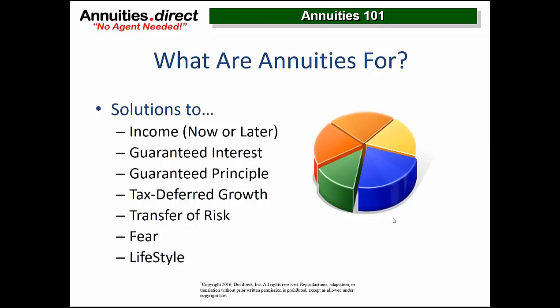You can solve for income or you can solve for guaranteed interest. Income now is an immediate annuity — a SPIA. Income later is a deferred income annuity or income rider. Guaranteed interest is a MYGA. Guaranteed principal would be an indexed annuity or a MYGA. You also get tax-deferred growth, which is why annuities were put on the planet in the first place. You're looking at your portfolio and asking how much risk you want to transfer. If you want growth, go buy a non-annuity. If you want guarantees, buy an annuity.